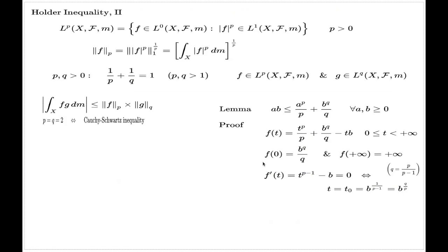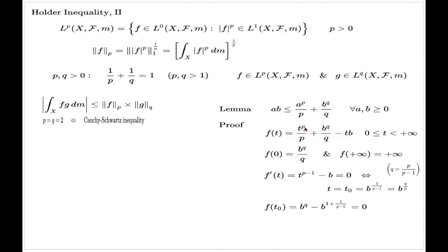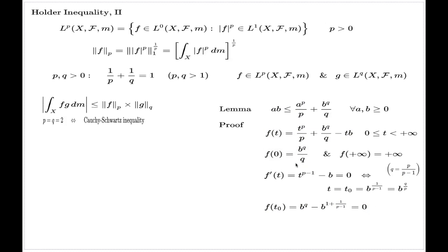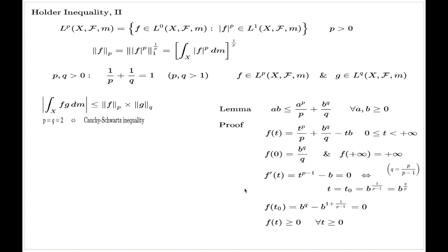Now we finish the extremum analysis. I have to compare the values of my function at the endpoints with the value at t0. At the point t0, substituting in gives b to the power q, and altogether the function delivers value zero. So the function f is non-negative and takes its minimal value zero at t0. That's why we have the inequality — it is exactly equivalent to the statement that f is non-negative. That finishes the proof of the lemma.